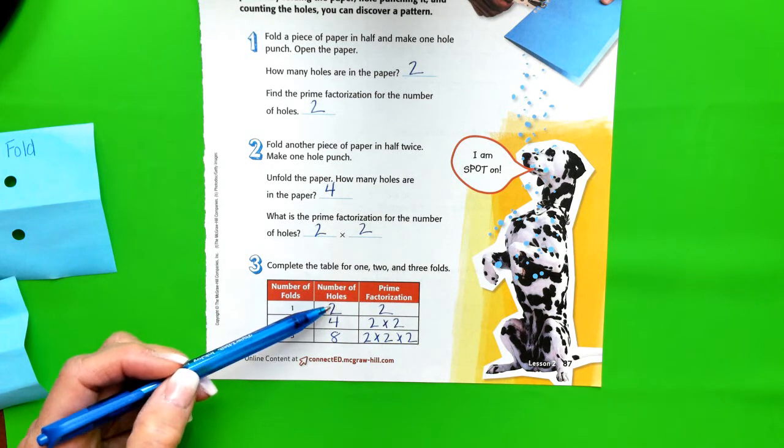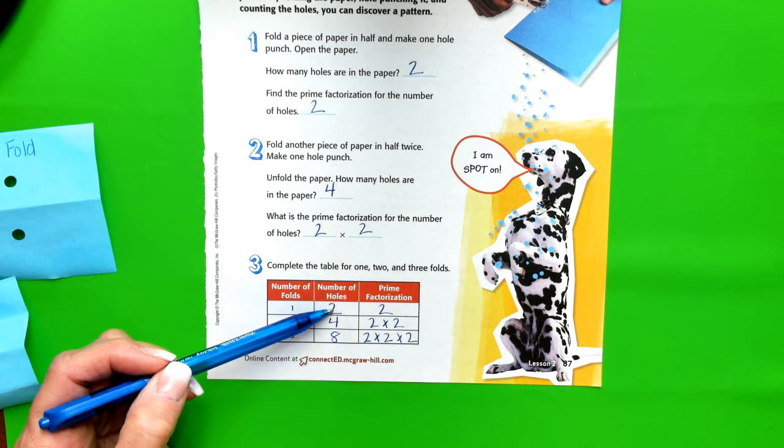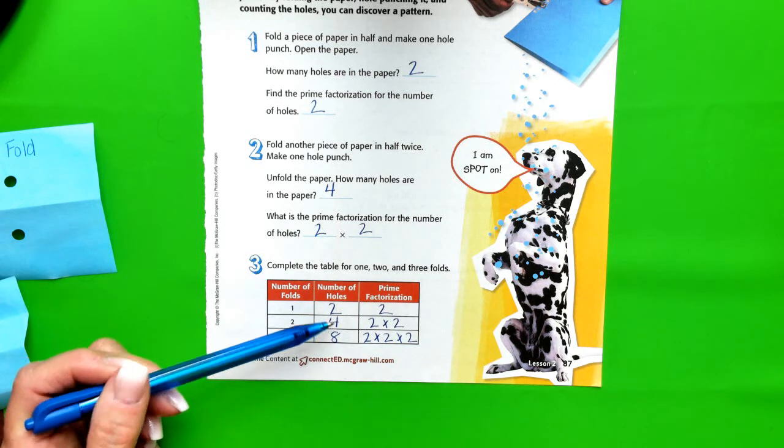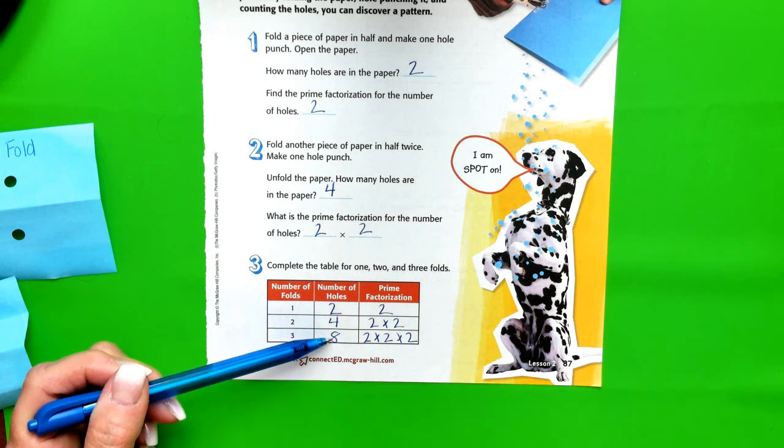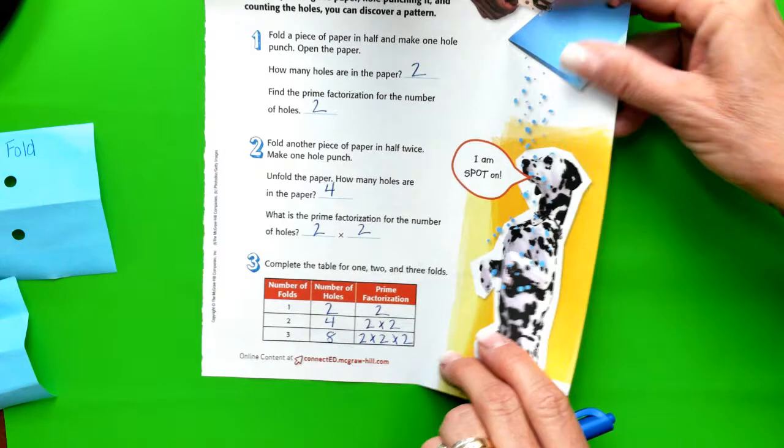So let's take a look. What do we notice is happening with these three numbers? Well, we started with two, and that doubled to four, and then that four looks like it's doubled to eight. Let me see what I'm seeing.